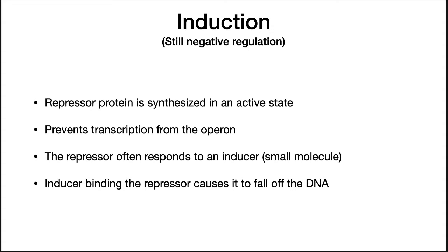There are two types of negative regulation: induction and repression. In induction, the repressor is synthesized in an active state and binds to the operon, preventing transcription. The repressor responds to a small molecule — in this case called an inducer. Inducer binding inactivates the repressor, causing it to fall off the DNA.